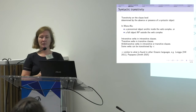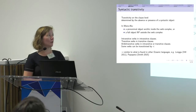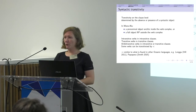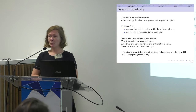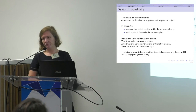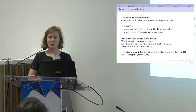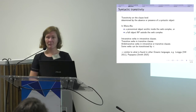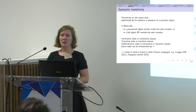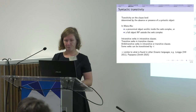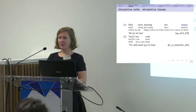Let's start with syntactic transitivity. That's fairly straightforward — it applies on the clause level and is simply determined by the absence or presence of an overt syntactic object. In Monoalu there can be a pronominal object enclitic inside the verb complex or a full object noun phrase outside the verb complex. There's no clearly identifiable noun incorporation in Monoalu. We get intransitive verbs and intransitive clauses — they take one argument and there's nothing much else exciting happening here.